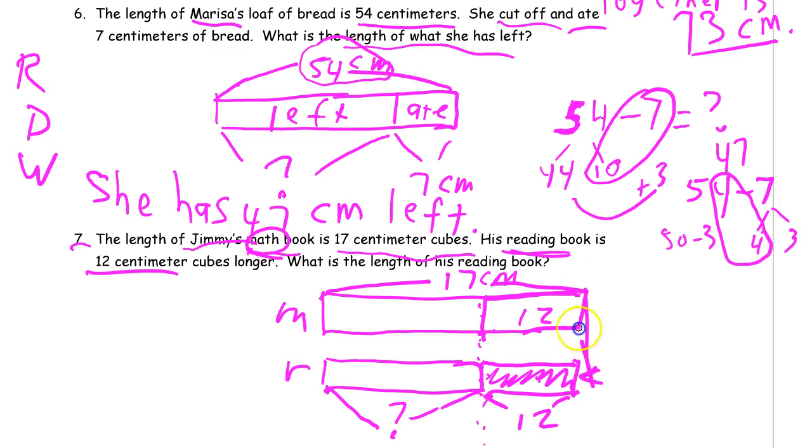And since these go end to end, these are both 17 from end to end. This is 12 and the whole thing is 17. What is this? What's the difference? What's this missing part here? 17 minus that 12 is going to be what we're looking for.